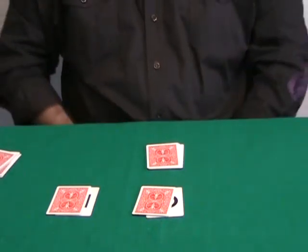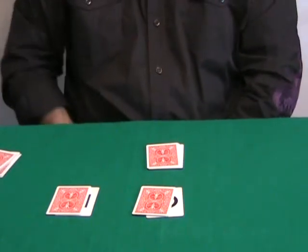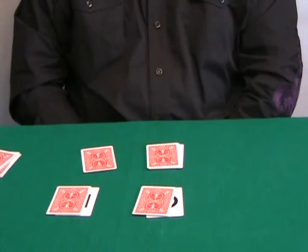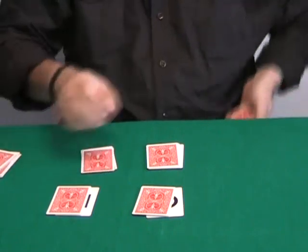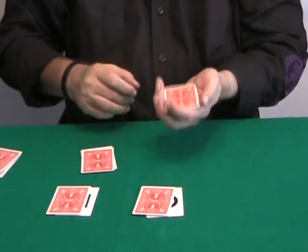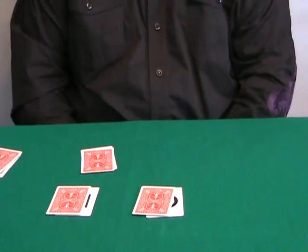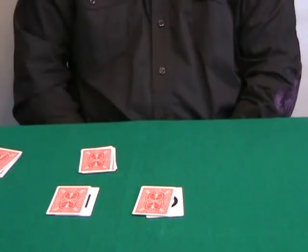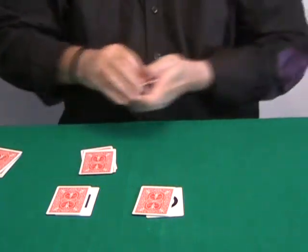And you place these underneath the table or behind your back and remove two cards. I place one and two. And then you take the other packet behind your back or under the table and place one card and another card like this.